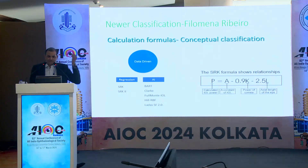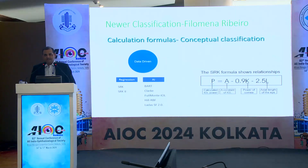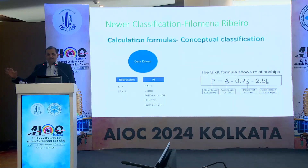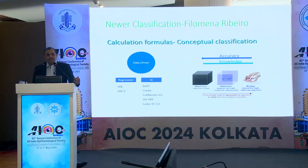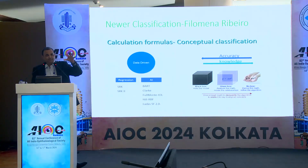To clarify the confusion, Philomena Riberio recently classified these formulas in a conceptual classification. Initially formulas were data-driven on regression; now data-driven formulas are AI-based — Barrett, Clarke, Fullmonte, Hill RBF, Lada Super Formula all use artificial intelligence. The problem with sole AI is it is only data-based; AI does not know about the biology or how the optics work in a regular manner. Dynamic phenomena like the pupil are not considered. So we cannot solely rely on AI because it will give false error results — we have to use AI at certain particular parts of the calculation, not solely.